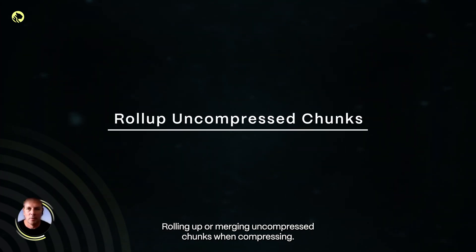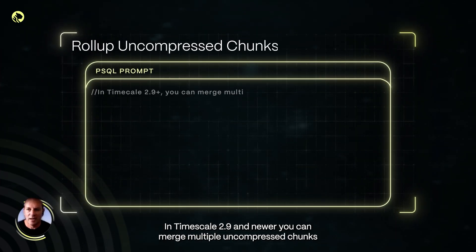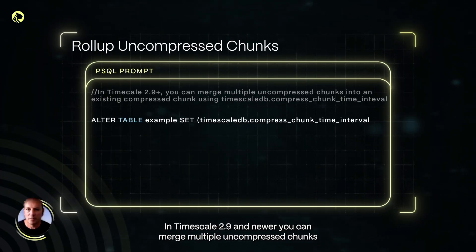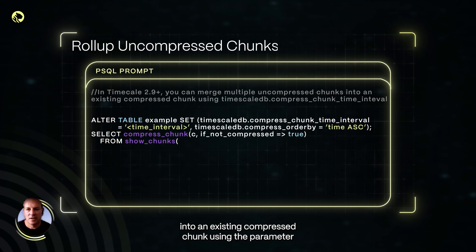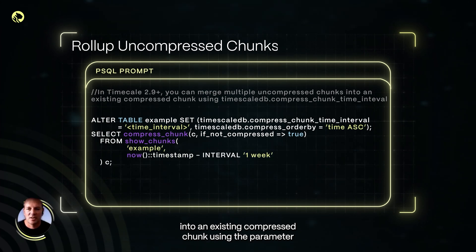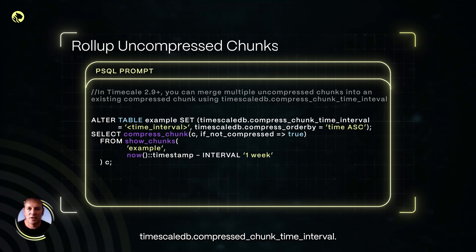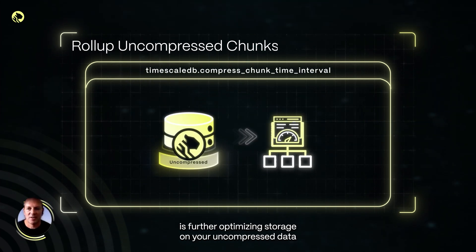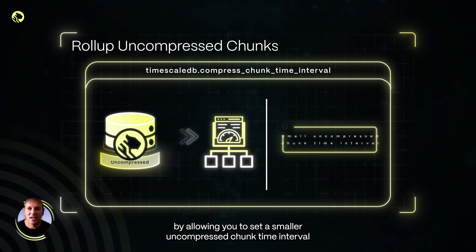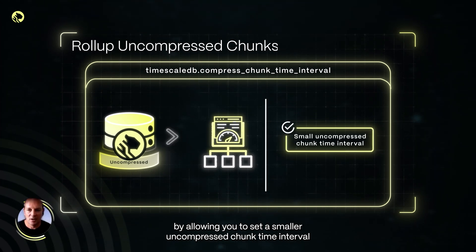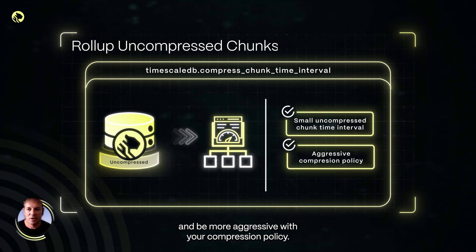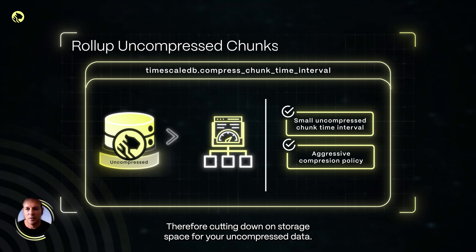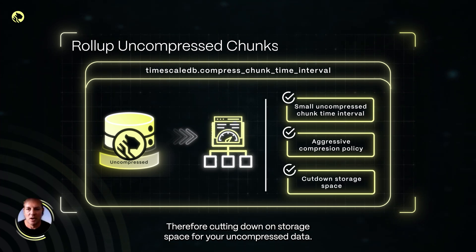Rolling up or merging uncompressed chunks when compressing. In TimescaleDB 2.9 and newer, you can merge multiple uncompressed chunks into an existing compressed chunk using the parameter timescaledb.compressed_chunk_time_interval. The ways that can benefit you is further optimizing storage on your uncompressed data by allowing you to set a smaller uncompressed chunk time interval and be more aggressive with your compression policy, therefore cutting down on storage space for your uncompressed data.